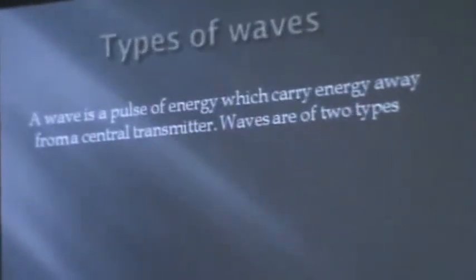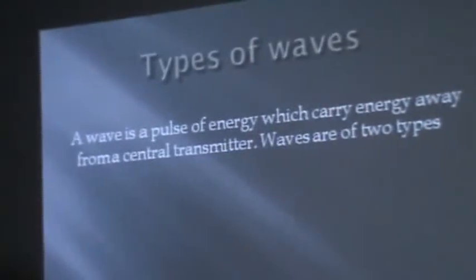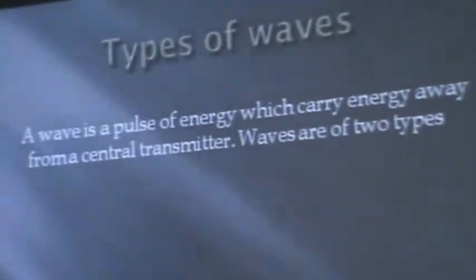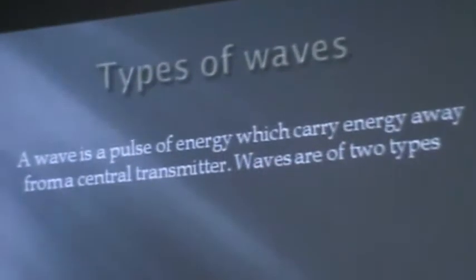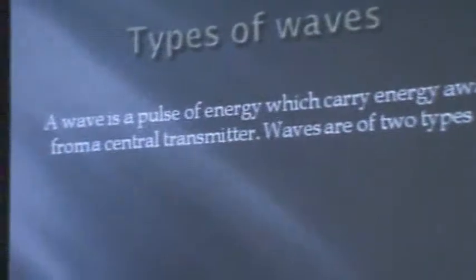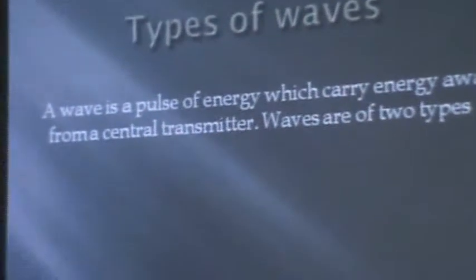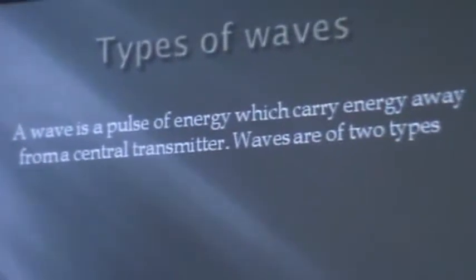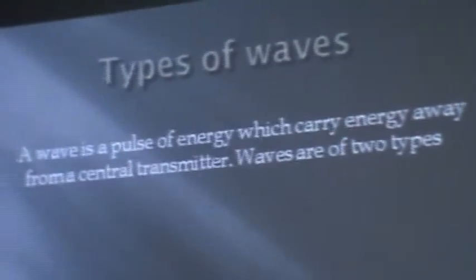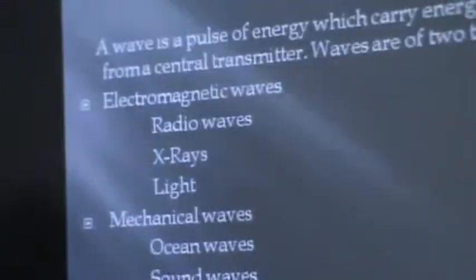Now, a wave is a pulse of energy which carries energy away from the source. The place from where the waves are generated, the energy is transmitted from that place to another medium. And there are two types of waves: electromagnetic waves and mechanical waves.